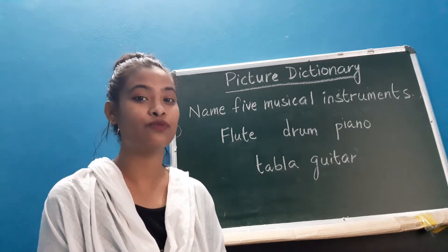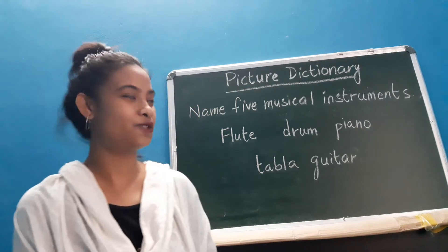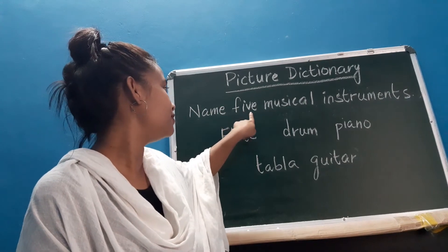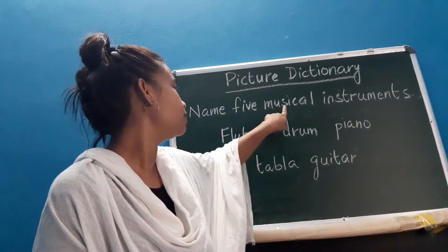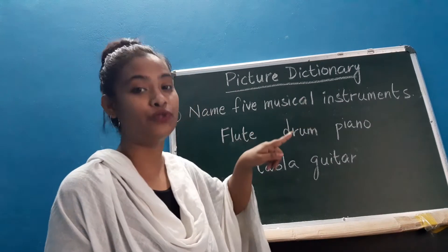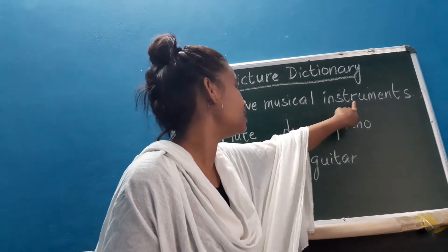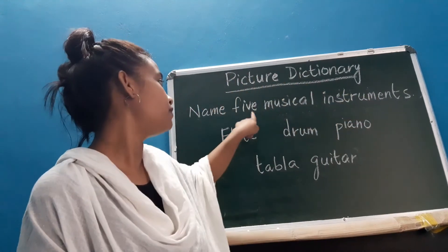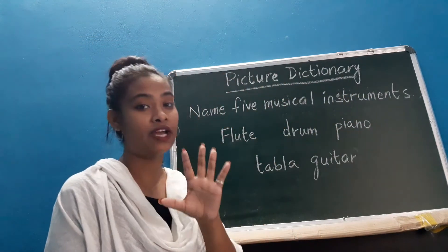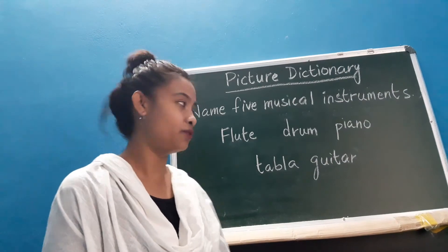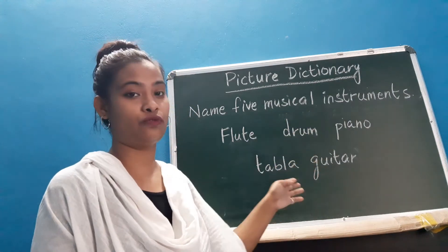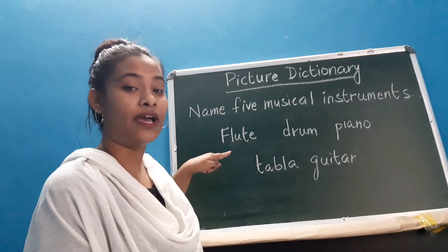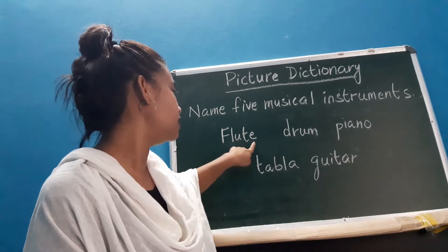With the help of musical instruments, we sing a song. So let's begin. Name five musical instruments. You have to write five things that are used to play music. So here are the five instruments. First one: F-L-U-T-E, flute. I repeat: F-L-U-T-E, flute.